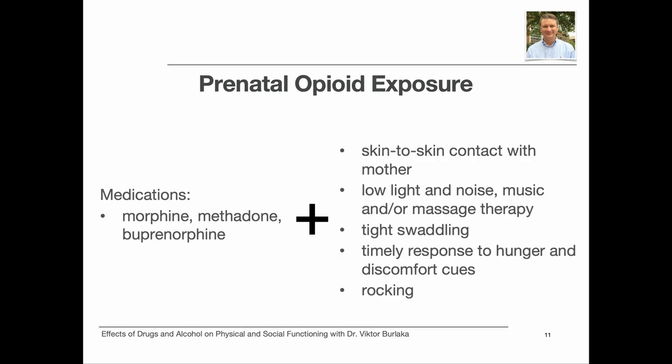Treatment for prenatal opioid exposure typically involves medically managed, stepwise withdrawal protocols with the use of opioid medications. In such cases, morphine, methadone, or buprenorphine can be used to gradually wean the infant from all substances. In addition, babies can benefit from skin-to-skin contact with mother or caregiver, low-stimulation environment, reduced auto-stimulation, timely response to water and nutrition needs, and rocking.